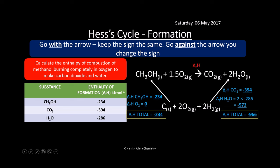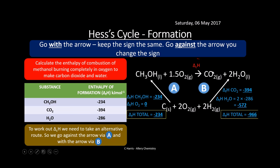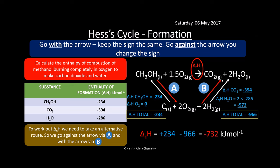This is the enthalpy of combustion — that's what we want to work out, the bit at the top. Imagine it like a roadblock: we want to get from reactants to products, but we can't, so we take a diversion — we go down here and then up here. Going against the arrow, we flip the sign. Going with the arrow, we keep the sign the same. So we do plus 234 (against the arrow, flipping sign from minus 234) and then minus 966 (going with the arrow). That gives an enthalpy of combustion of minus 732. A good check: put all the numbers in as you go around the cycle — they should add up to zero.